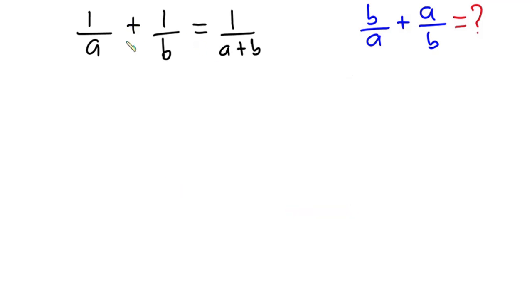First I'm going to combine the left hand side of this equation. The first thing I'm going to do is multiply this numerator by b and then divide by the exact same thing. Then I'll multiply here by a and divide by the exact same thing.